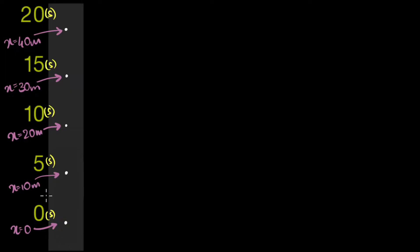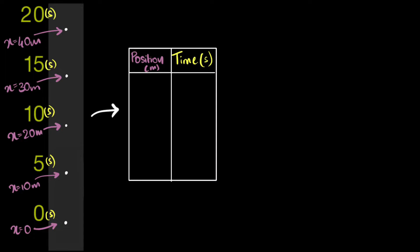Well, we now have our position and time recordings. So we can go ahead and fill up this position time table. Why don't you give it a shot first? All right, let's do it. So at time zero seconds, our position was zero meters. Then at five seconds, our position is 10 meters. Then at 10 seconds, 20 meters. 15 seconds, it's 30 meters. And at 20 seconds, we are at 40 meters. Ta-da! This is how we draw our position time table.